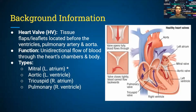Heart valves are tissue or leaflets in your heart chambers. There are four different types — the main ones are the mitral, aortic, tricuspid, and pulmonary — found in the left atrium, right ventricle, right atrium, and right ventricle. There are also support structures called the chordae tendineae, which are anchored by papillary muscles found in both the left and right ventricles.